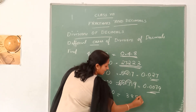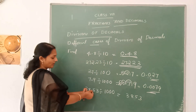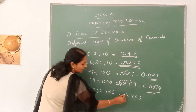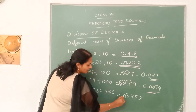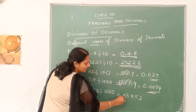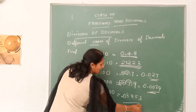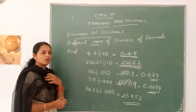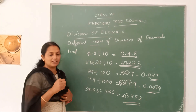For the next example, write the number and move the decimal from right to left 3 digits. Put the zeros on the left and place the decimal, giving the answer 0.03853.